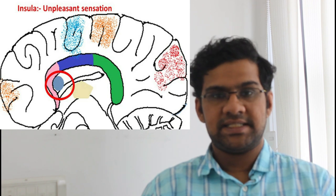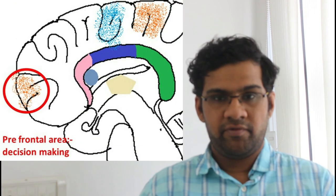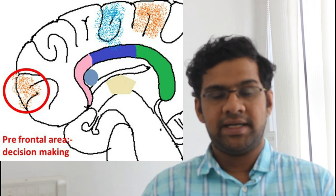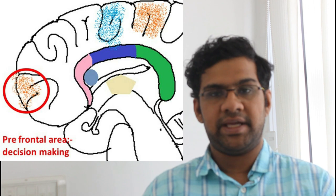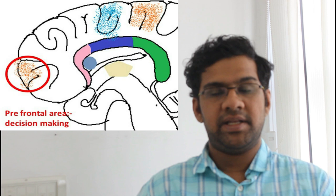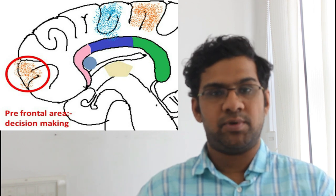Prefrontal areas of the brain are also activated and they help in decision-making. Finally, the striatum, the motor areas, and the cerebellum help in generating a scratch response.